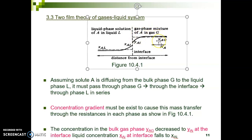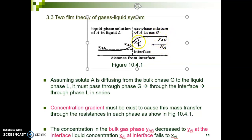The notation for Y and X represents composition. For the gas phase we use Y, and for the liquid phase we use X. Component A is your solute — we want to absorb A from a gas mixture containing carrier gas B. Your liquid is your solvent. G represents gas, I represents interface, and L represents liquid. You can see that YAG is much higher compared to YAI, XAI, and XAL, and the concentration decreases from YAG to XAL.